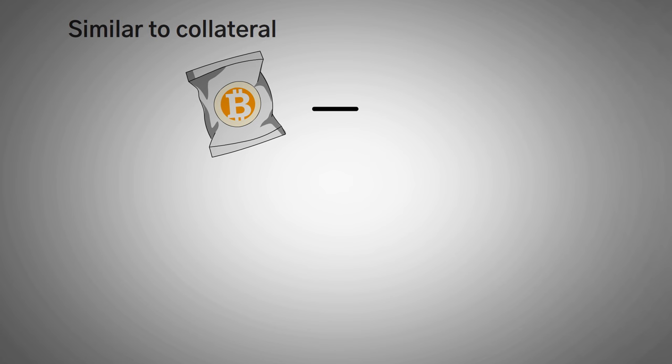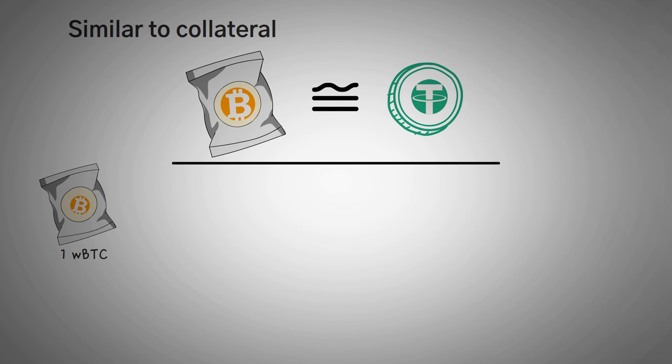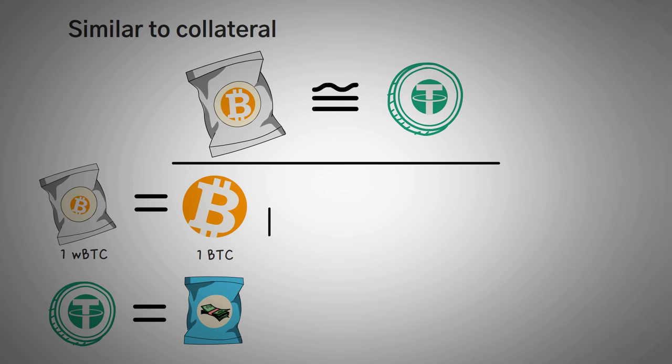Wrapped tokens are actually pretty similar to stablecoins, or cryptocurrencies that are pegged to a fiat currency's value. A wrapped token, like WBTC, retains the value of the wrapped asset, and in this case it would be bitcoin. So one WBTC always equals one bitcoin. Stablecoins pretty much do the same thing. They are basically wrapped fiat currencies used for improved transaction efficiency.